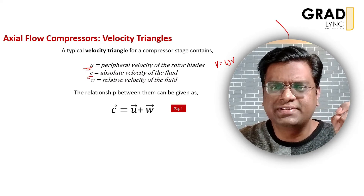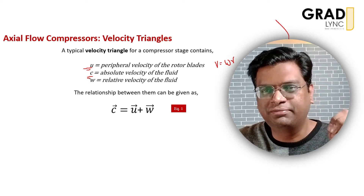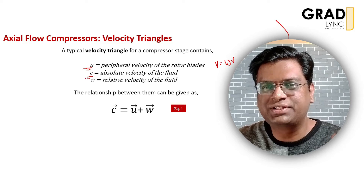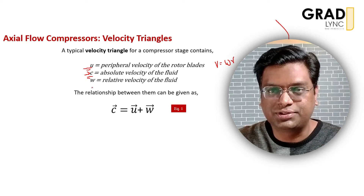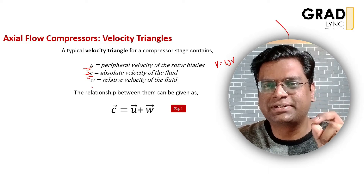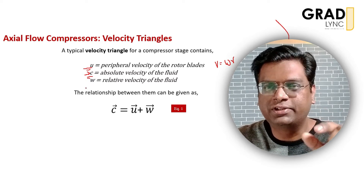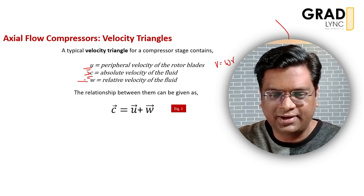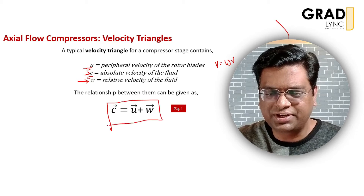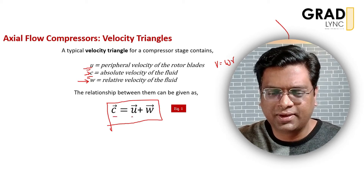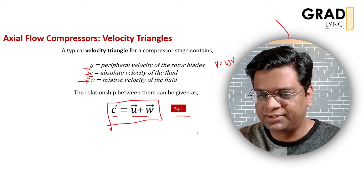The second parameter is the absolute velocity of the flow itself. The flow enters the compressor stage with a velocity denoted as c. Because there exists a rotor velocity u and an air velocity c, there will be a relative velocity between these two vectors, which we call w. The relationship between these three velocity vectors is given as c = u + w, which is a vectorial sum. Let's call this equation number one.